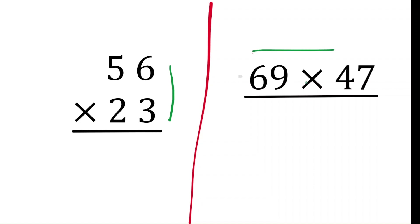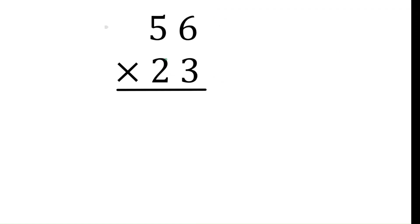Let's solve the first problem: 56 times 23. When doing column-wise multiplication, you write the numbers side by side — 6 and 3 in the same ones column, and 5 and 2 in the tens column. I'm taking 23 first, starting with the ones digit 3.